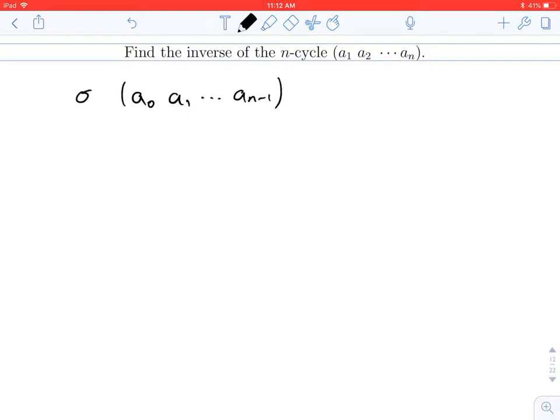And let's give a name to this. Let's call this sigma. And we saw in a previous video that if you applied sigma to any of these terms, it's just going to increase the index by 1, with the one little caveat that when you get to n minus 1, you have to go back to 0.